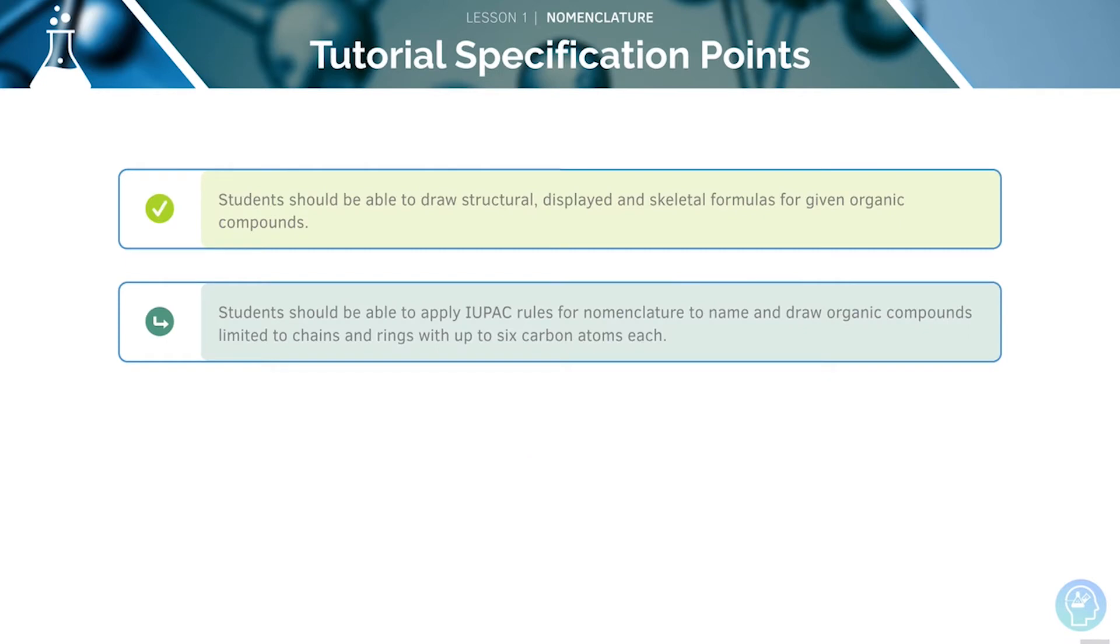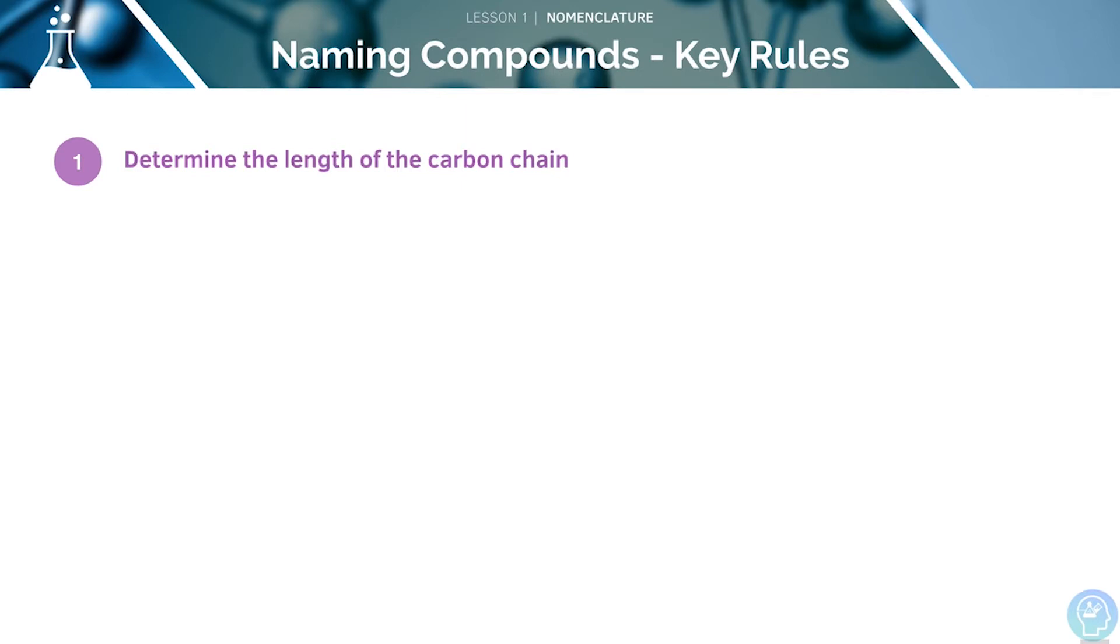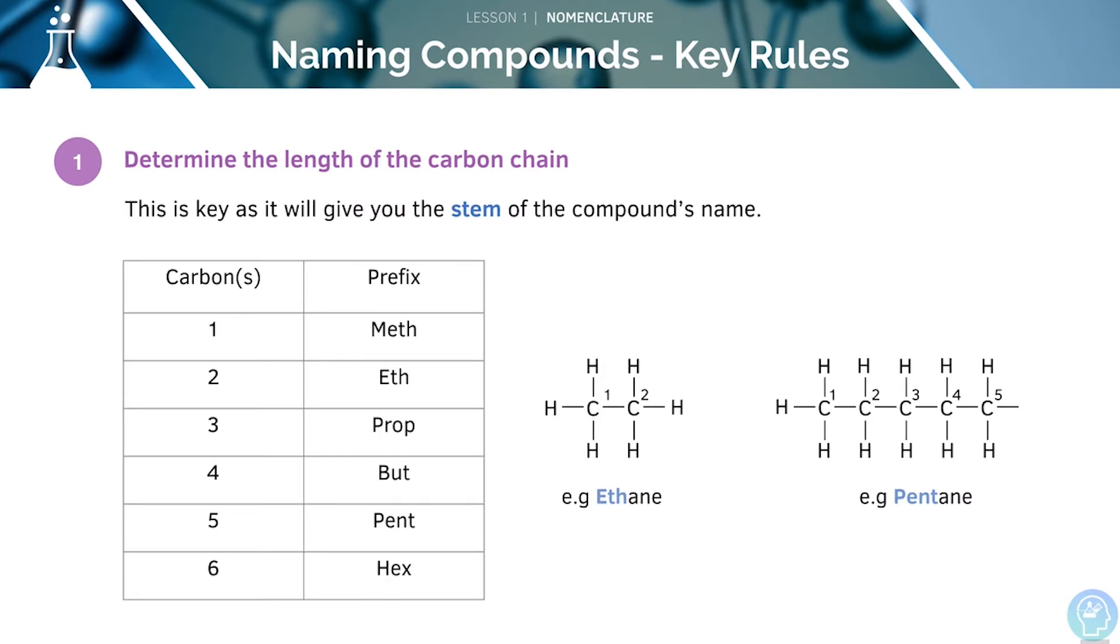Now, we'll be moving on to the rules for nomenclature. To name any compound, there are some key rules to remember. First, we must determine the length of the carbon chain. This is key as it gives you the stem of the compound's name. The key ones you need to know are shown here. The stem will change depending on the number of carbons in the compound.